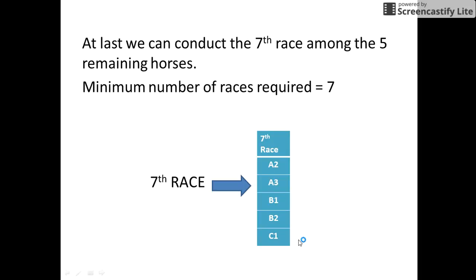And in the seventh race, the first position holder would be eventually second overall and the second position holder would be third overall. So, the minimum number of races required to find the top three positions are seven.